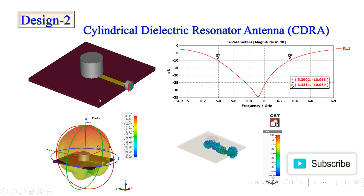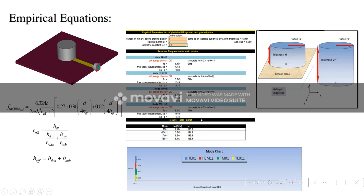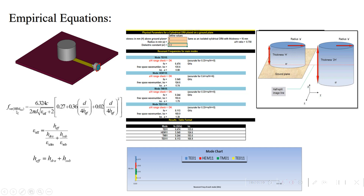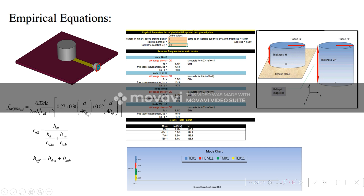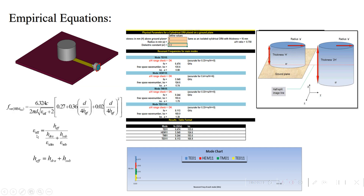This is the empirical formula for CDRA. I have used the HEM (Hybrid Electromagnetic) modes. For these modes, D is the diameter of the cylindrical DR and H is the effective height of the dielectric resonator. We can find out the effective permittivity and effective height of the DR using these formulas. I have also prepared an Excel sheet for cylindrical dielectric resonator antennas.